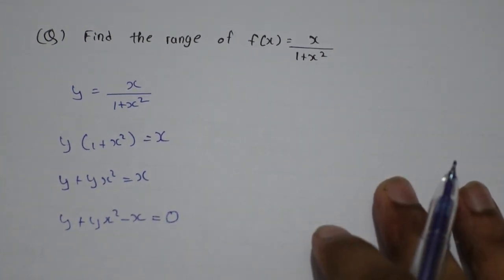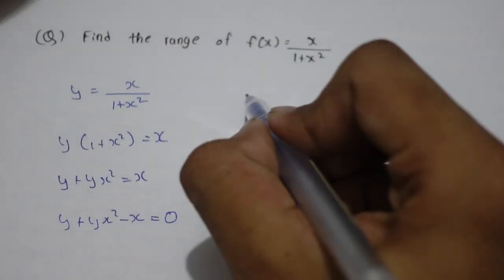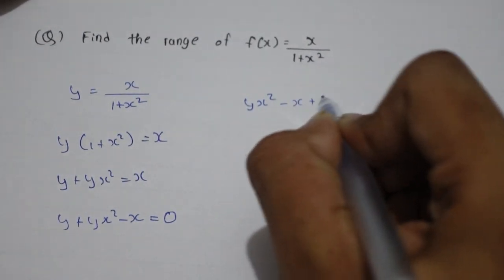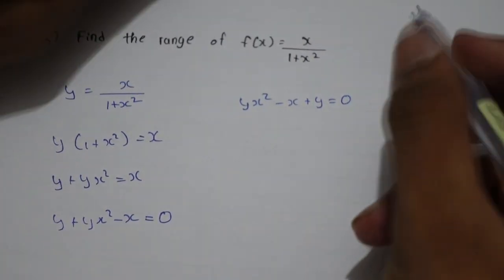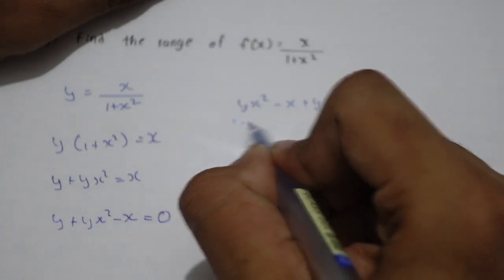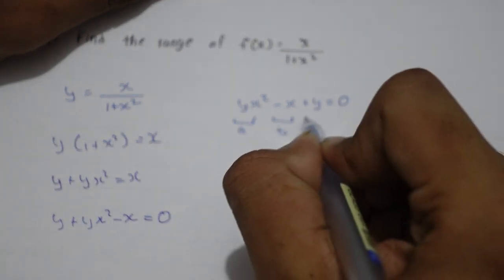You can rearrange this in the form of a quadratic. So yx² - x + y = 0. Now you can take this as a, this as b, and this as c.